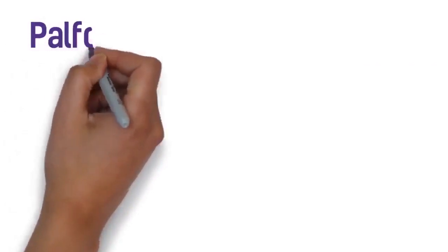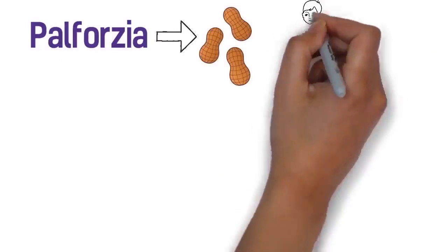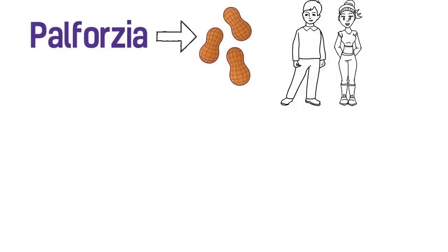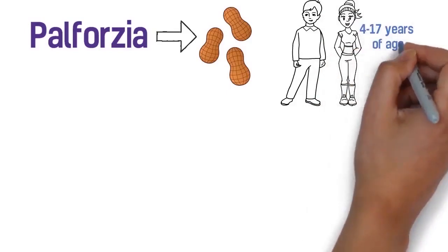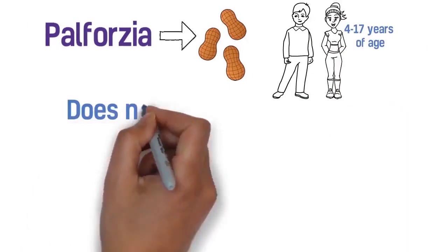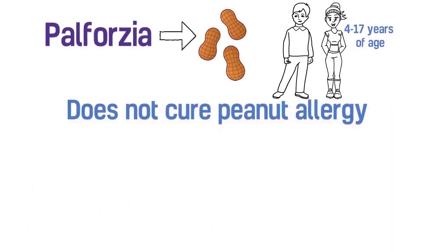The type of OIT treatment we'll discuss today is called Palforzia. Palforzia is a prescription medication made from peanuts. It's approved for the treatment of peanut allergy in children 4-17 years of age. Palforzia does not cure peanut allergy or treat allergic reactions.